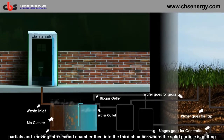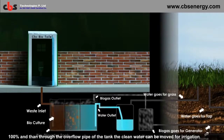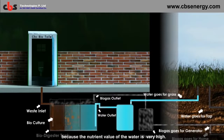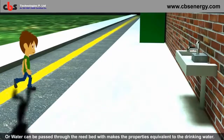Then into the third chamber where the solid particle is getting eliminated 100%, and then through the overflow pipe of the tank the clean water can be moved for irrigation because the nutrient value of the water is very high, or water can be passed through the reed bed which makes the properties equivalent to drinking water.